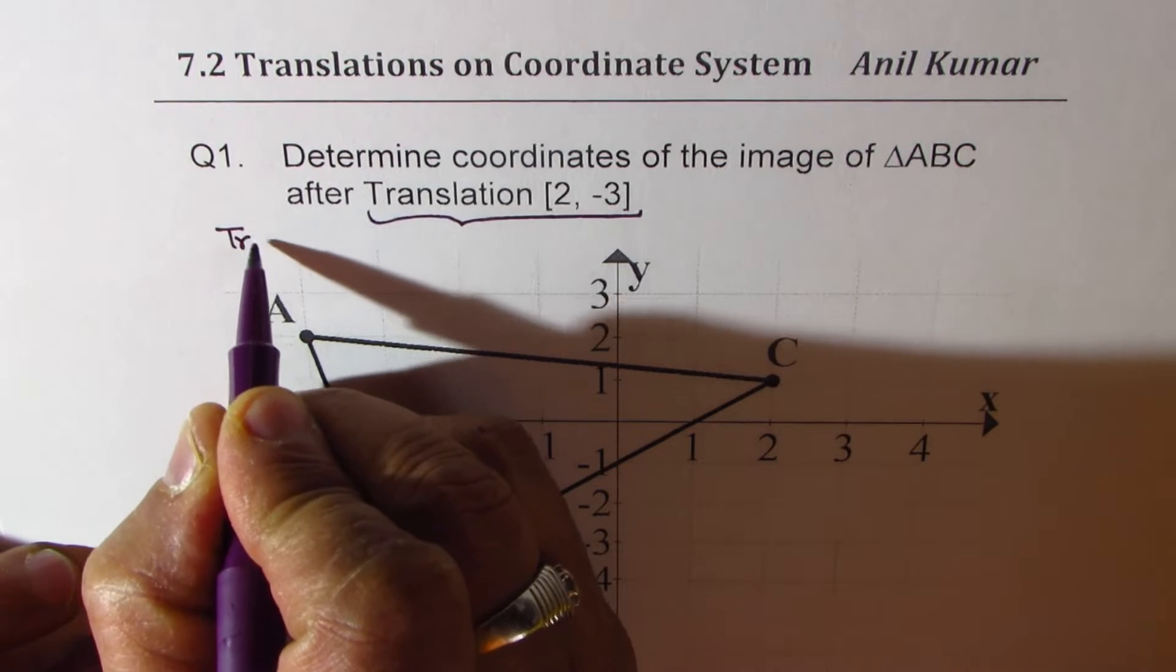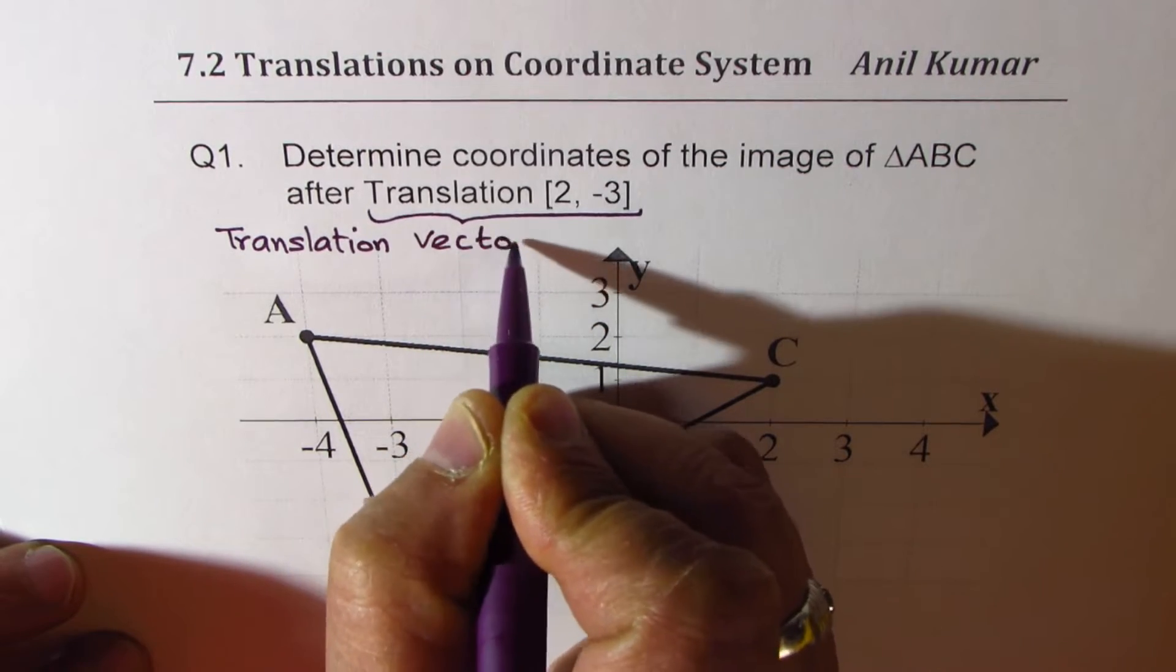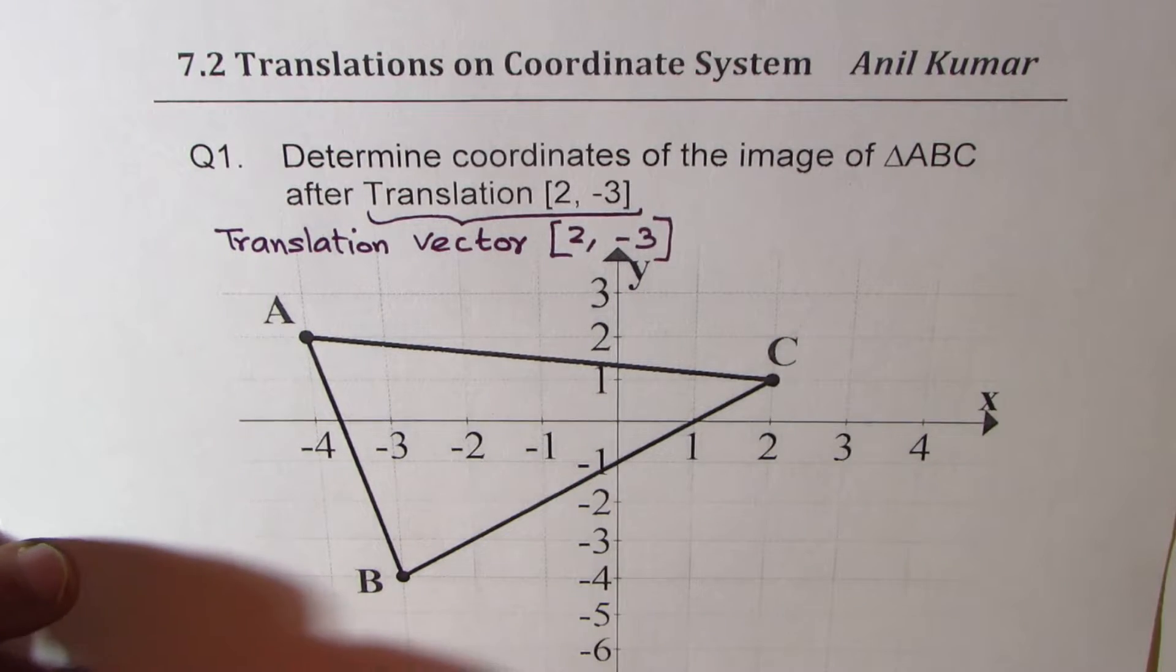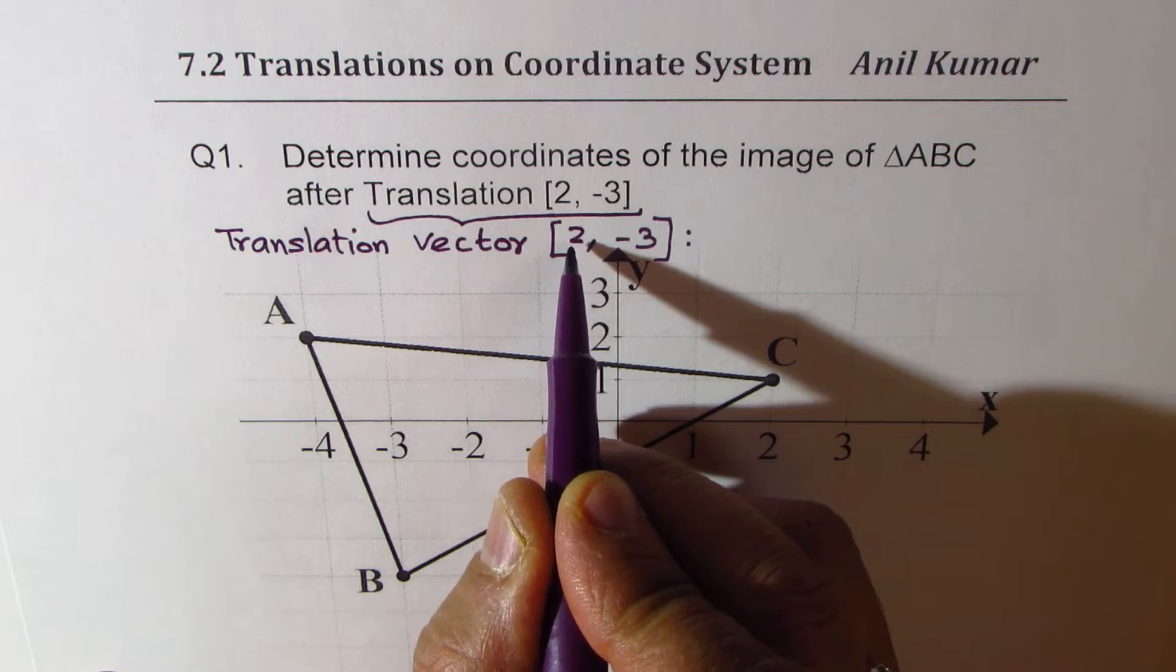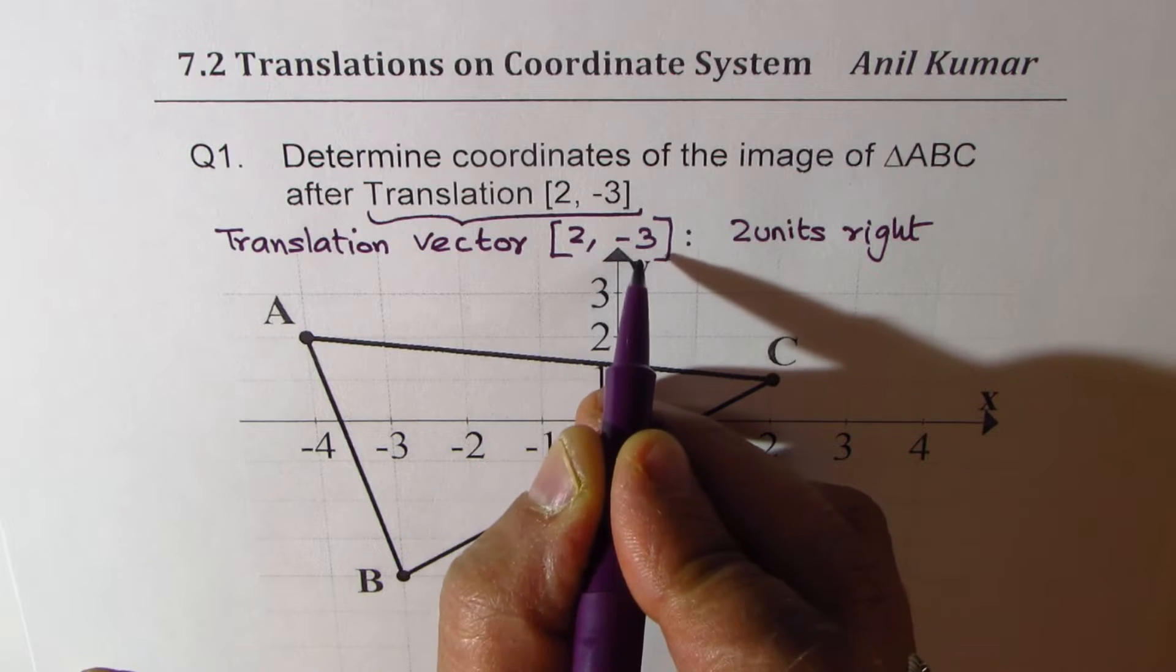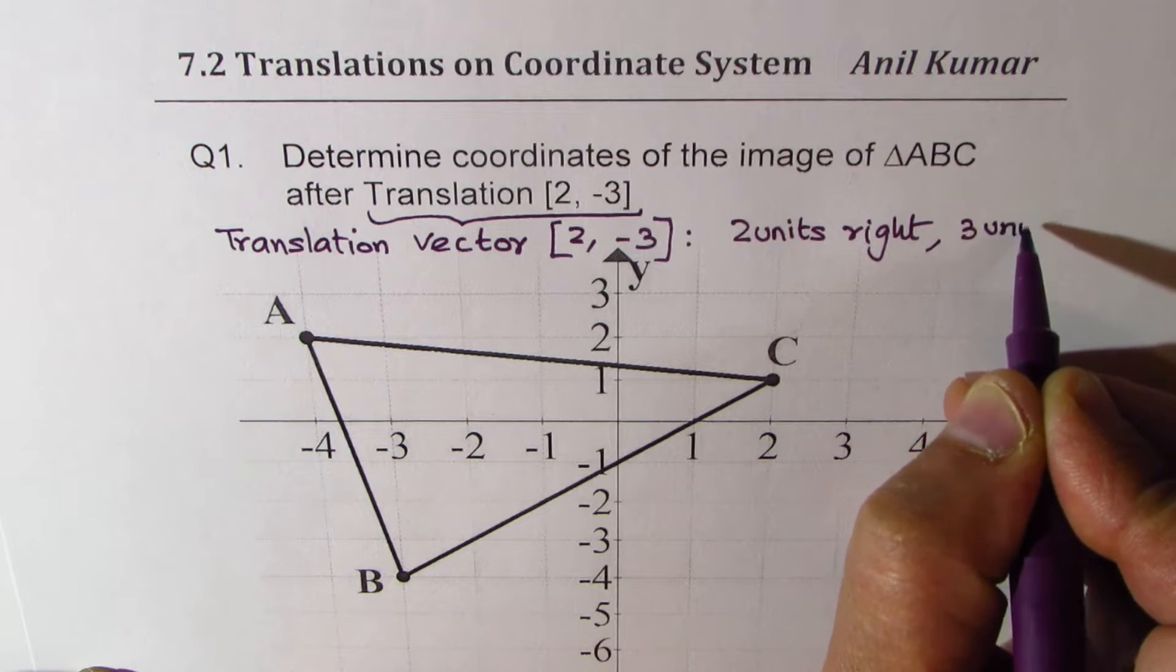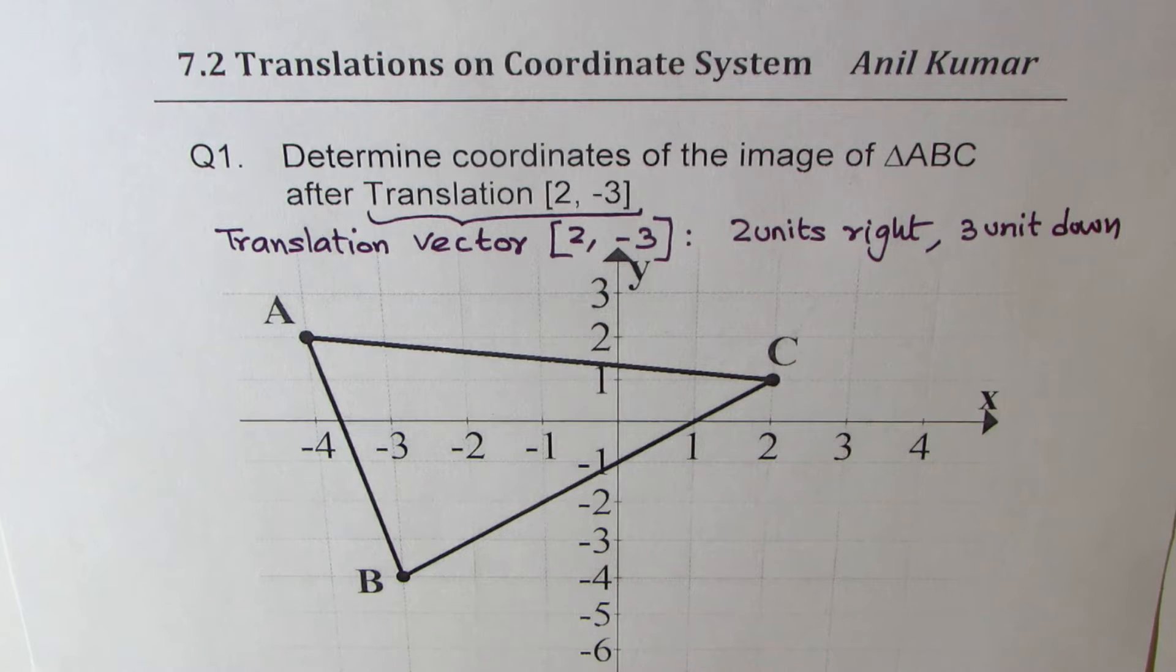Now the translation vector within square brackets written as [2, -3] means what? It means that the whole block will be moved two units, that is x units, right. Since it is positive, the first value gives you the x value. Second is the y value, change in y value. Minus three means three units minus, down. So that is the translation which we have to do for this particular question.